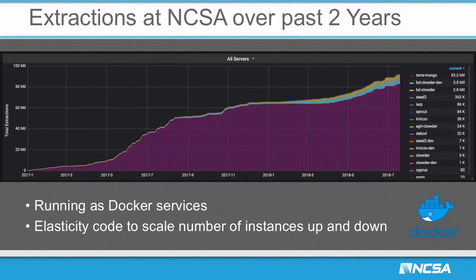Over the past couple of years at NCSA we've run many Clouder instances. We've dockerized all the extractors and can scale them up. A graph shows about 83 million extractions done on one NCSA cluster across multiple projects since 2017, largely dominated by the TerraRef project, with IML-CZO visible as well.